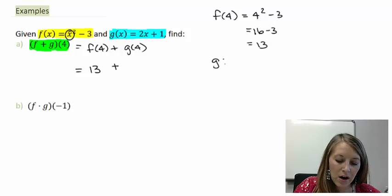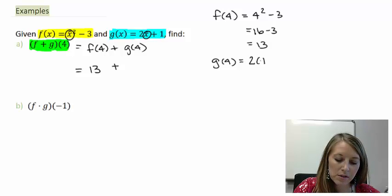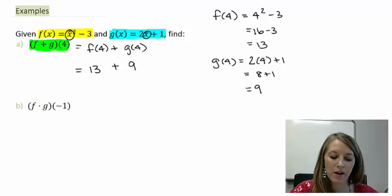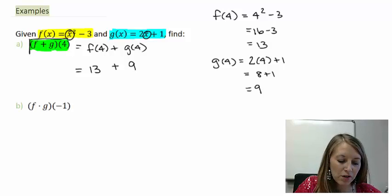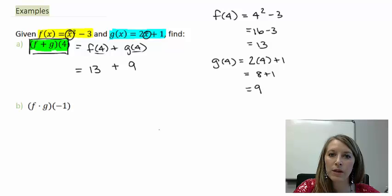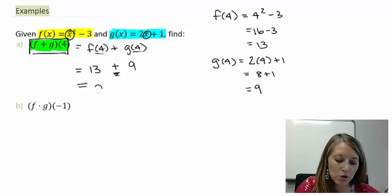Now I need to figure out what g(4) is by substituting 4 into that function: 2 times 4 plus 1 gives me 8 plus 1, which is 9. So f plus g of 4 is the same as f(4) plus g(4), which simplifies to 13 plus 9. Simple addition gives me 22, and that's my final answer.